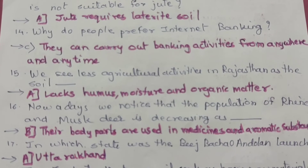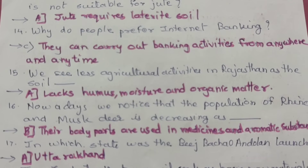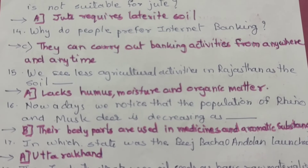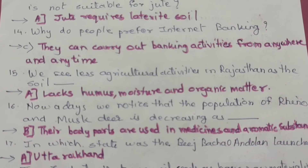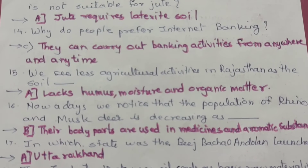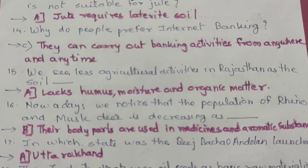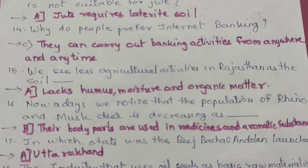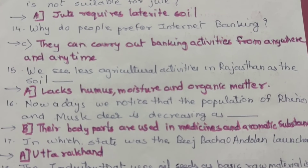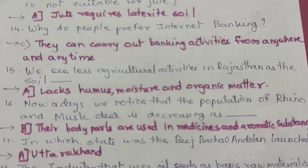Question 14: Why do people prefer internet banking? The correct option is C — they can carry out banking activities from anywhere and anytime. Question 15: We see less agricultural activities in Rajasthan as the soil is — the correct option is A — lacks in humus, moisture, and organic matter.